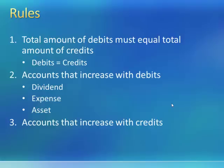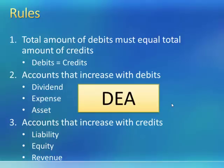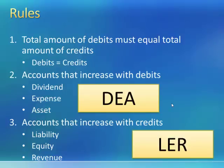The accounts that increase with credits are liabilities, equities, and revenue. Looking at it another way, if we take the first letter of each of the accounts that increase with debits, we have DEA, and then the accounts that increase with credits, we have LER.